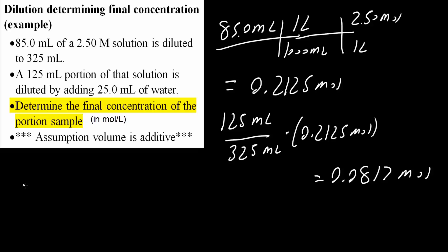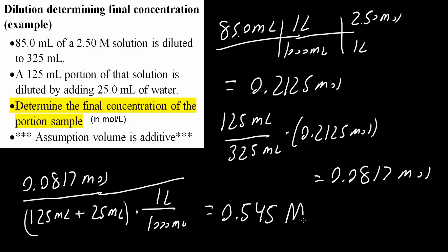So we have 0.0817 moles and we will divide by total volume. We had 125 mL plus we're diluting it. So we're adding 25 more mL. From here we want this to be liters. We know that 1000 mL would contain one liter. So we have moles over liter. This gives us 0.545 capital M for molarity. And that's all we need to do for this problem.